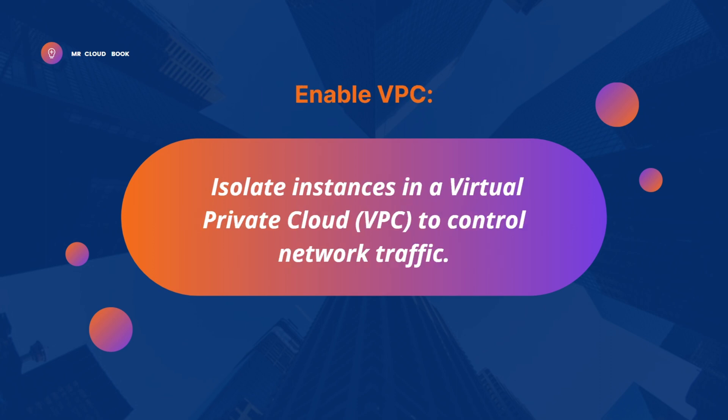For the second tip, enable the VPC — isolate instances in a Virtual Private Cloud to control network traffic. Think of your VPC as a gated community. Your internet-facing EC2 instances are like houses within this community, and other instances are in separate neighborhoods. You control who enters and leaves each neighborhood, which restricts network traffic effectively and prevents outsiders from easily accessing your instances.